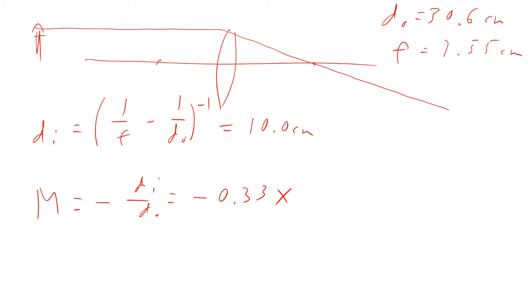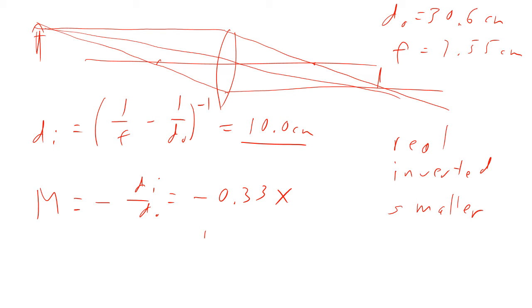Magnification minus di over do now comes out to be minus 0.33 times. So if we do a ray diagram, it would look like this. So what we found was that it is in fact still a real image. It's still inverted, minus sign means it's inverted, from a ray diagram we also see it's inverted. The magnification is less, the absolute value is less than one, so 0.33, so that means it is smaller, and it's at that location.